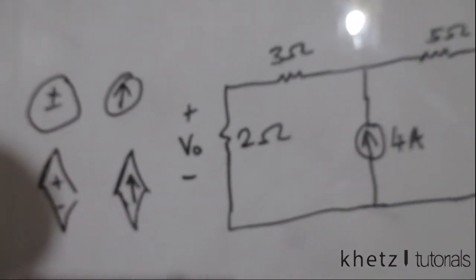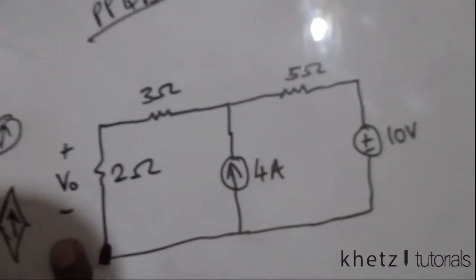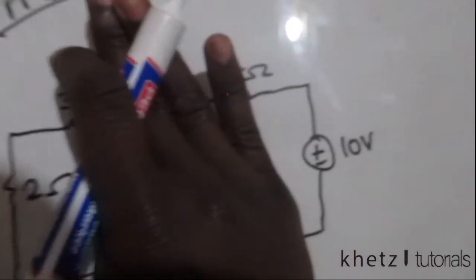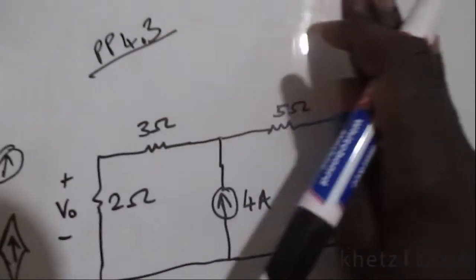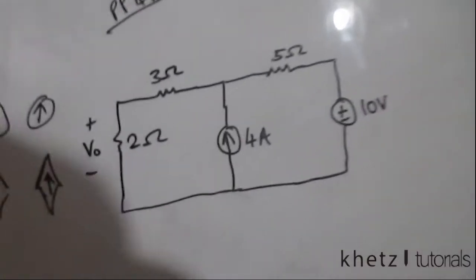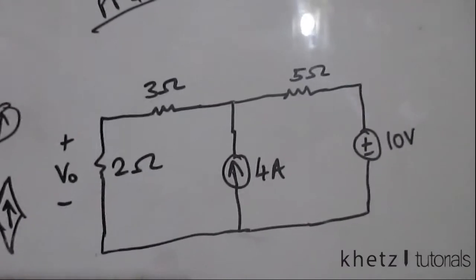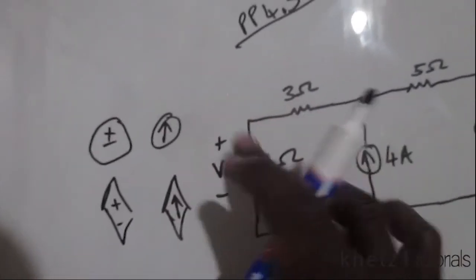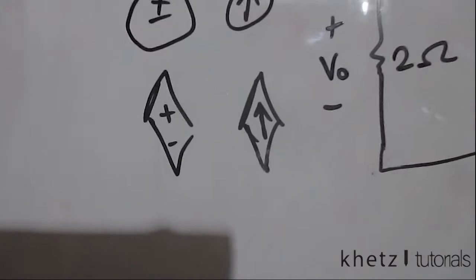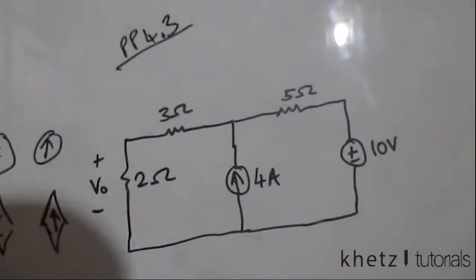To repeat: the value of Vo is the sum of the value you get after ignoring the 4 amperes, plus the value of Vo when you ignore the 10 volts. In superposition you deal with one independent source at a time and add each contribution to the variable of interest — in this case Vo. If you had a dependent source somewhere in the circuit, you do not take it out; this applies only to independent sources.